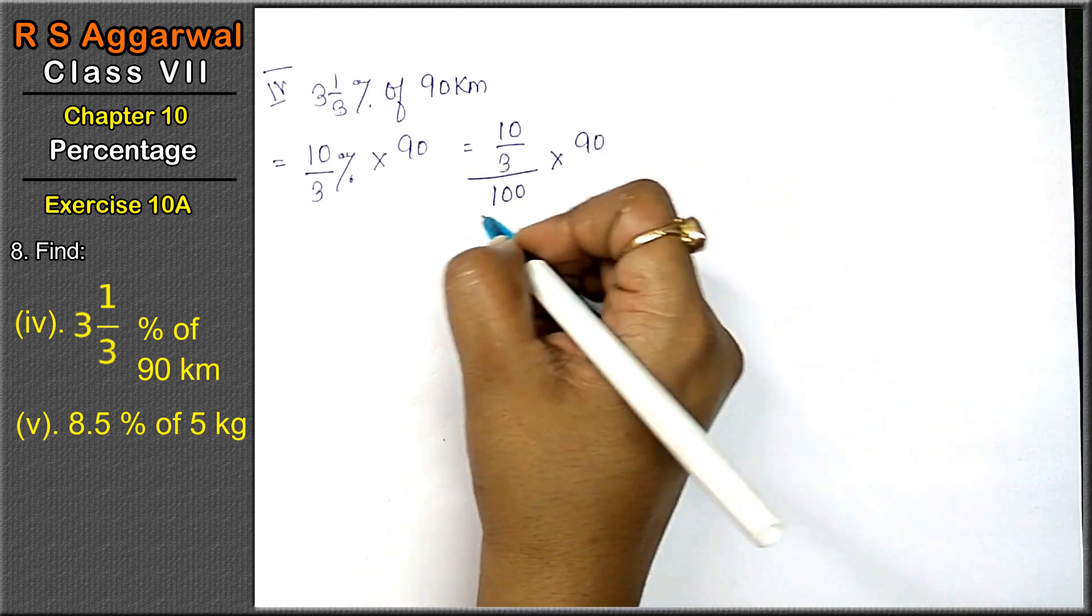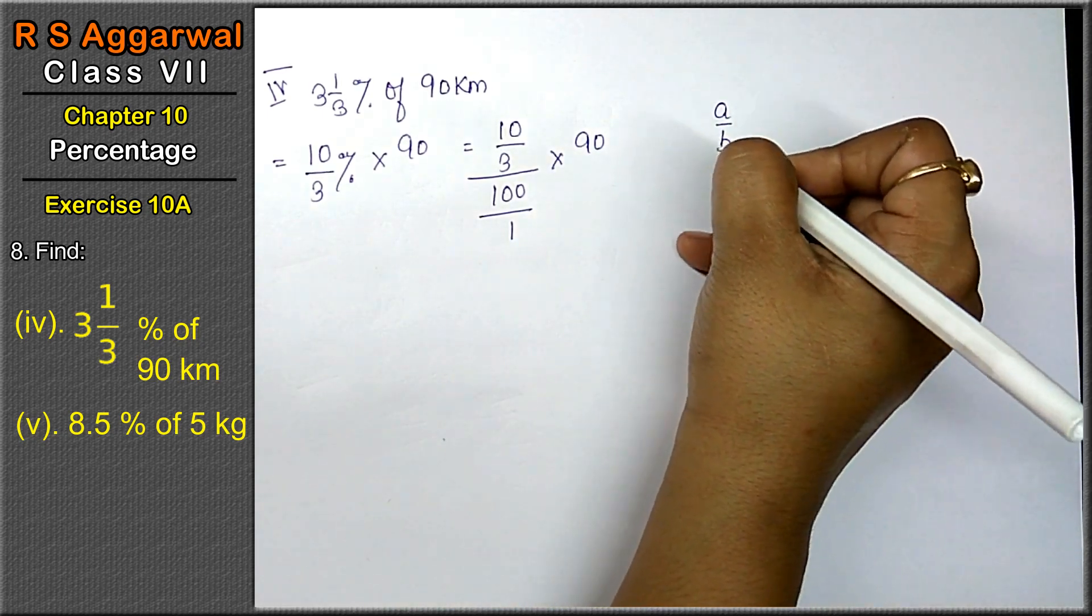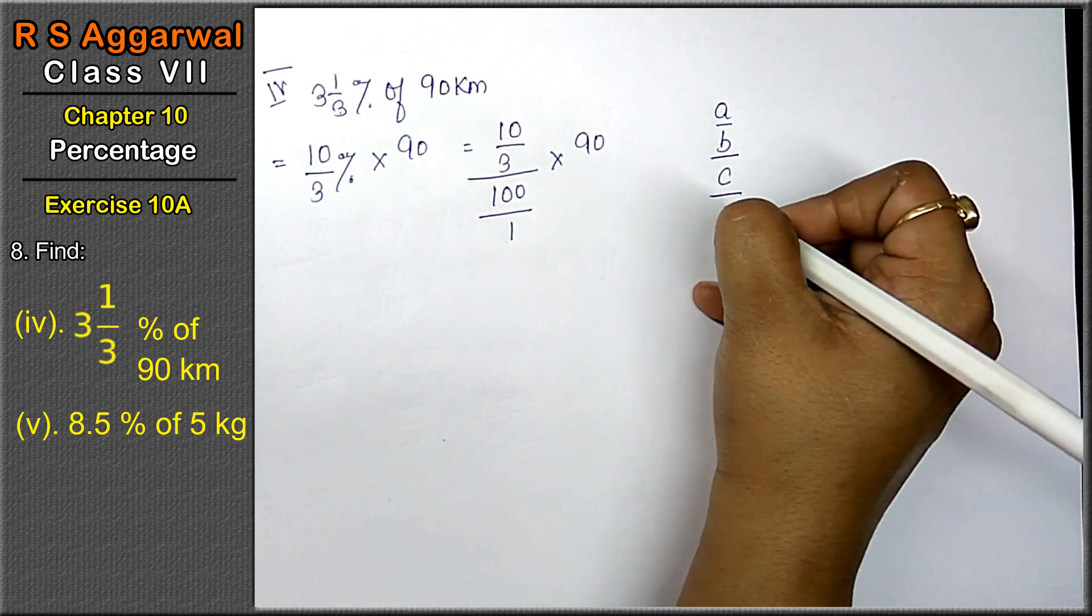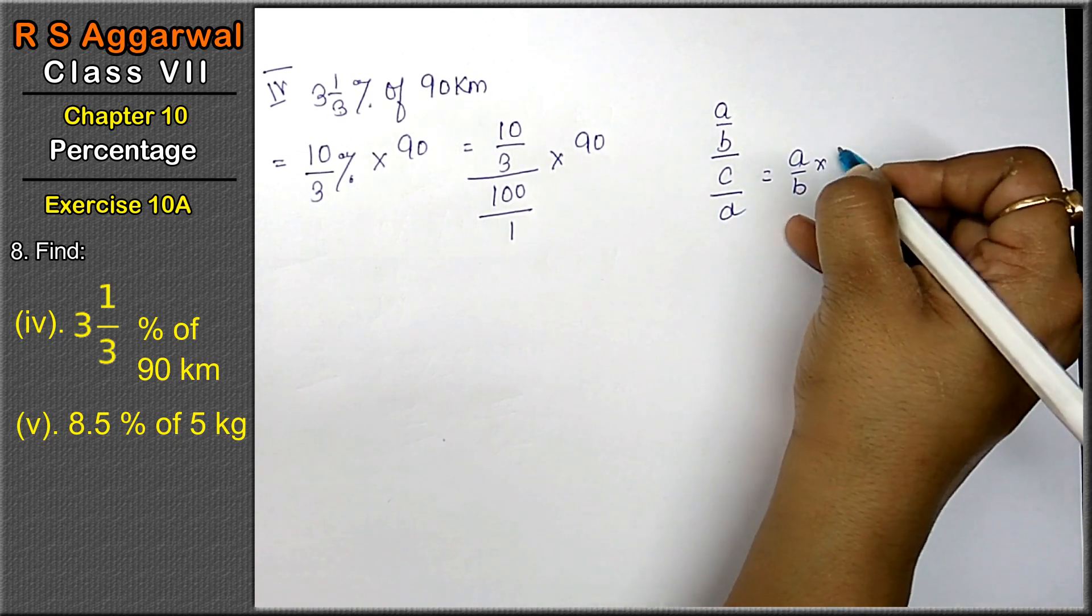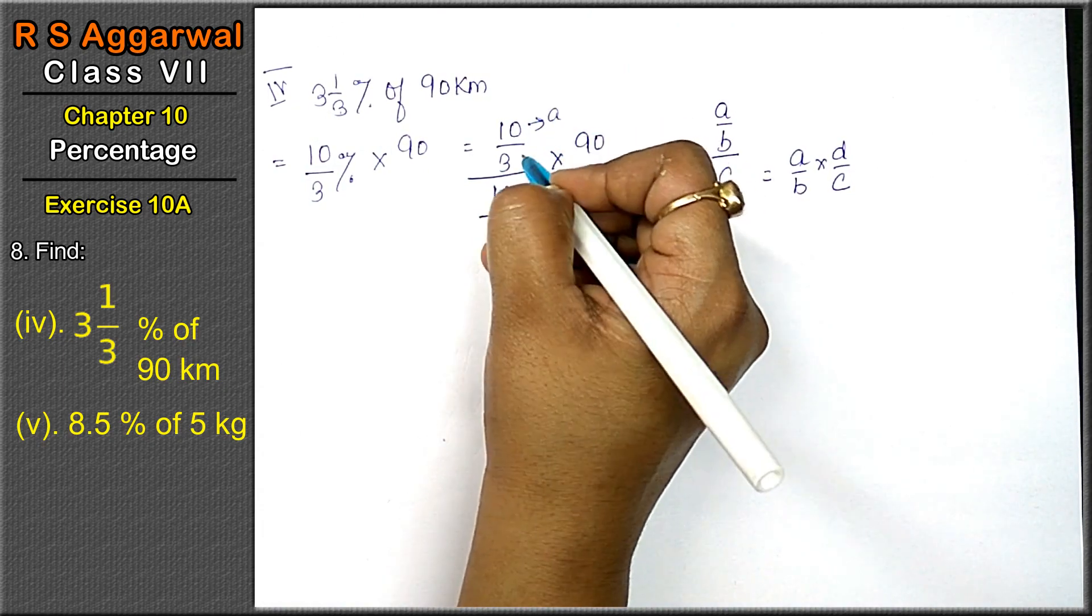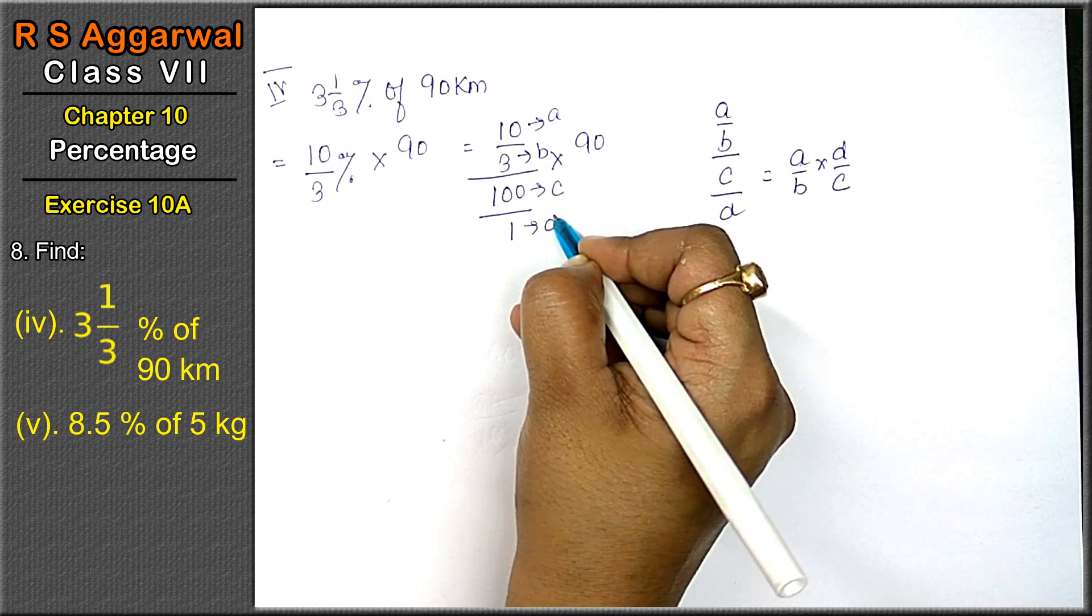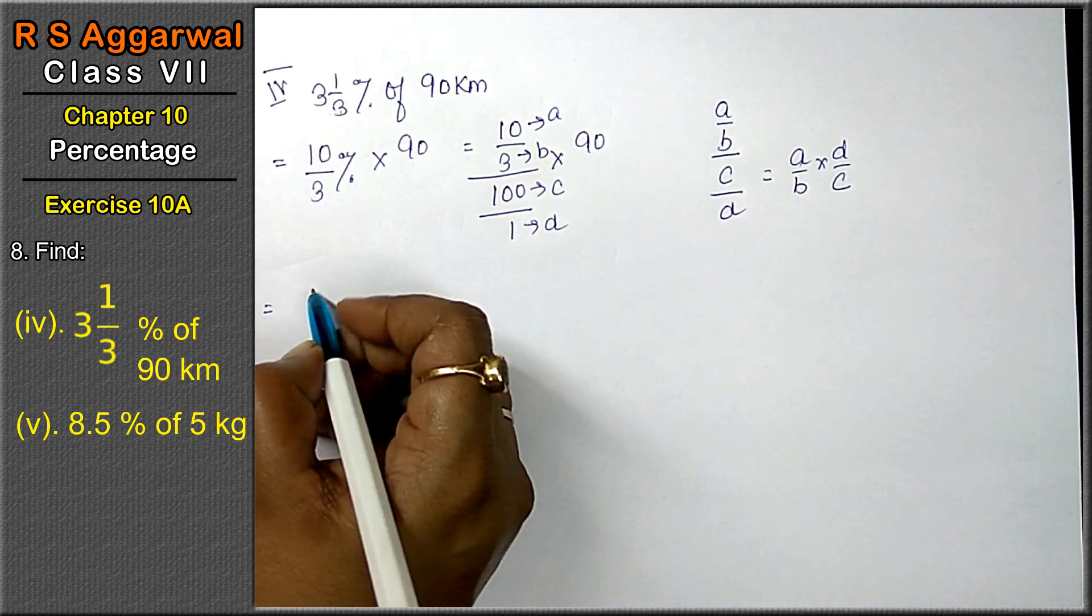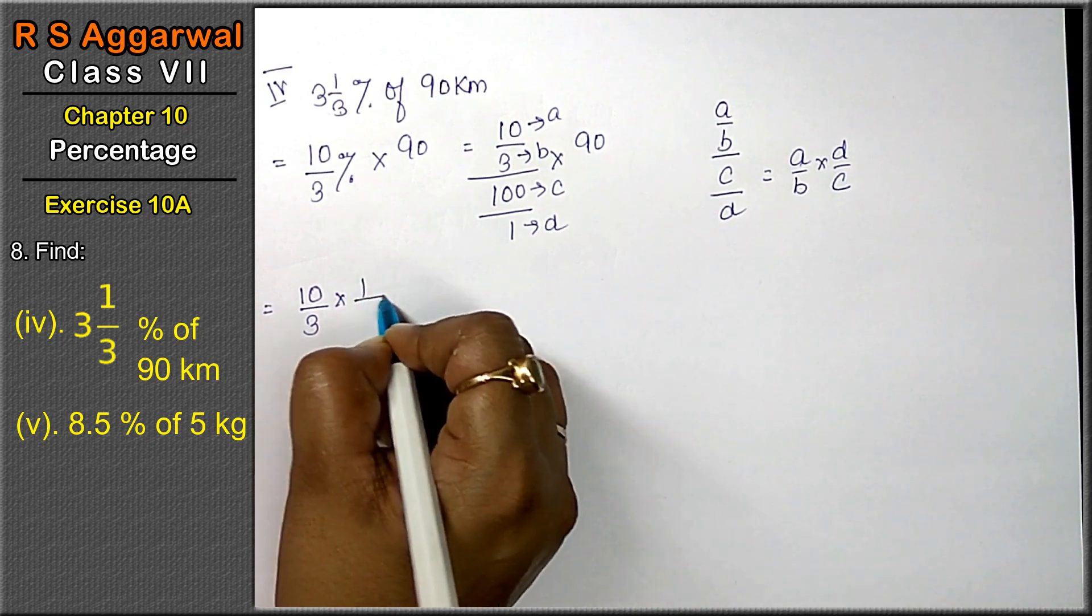Friends, when there's nothing below (denominator of 1), this a upon b upon c upon d form becomes a upon b multiplied by d upon c. Here a is 10, b is 3, c is 100, and d is 1. So a upon b is 10 upon 3 multiplied by 1 upon 100 into 90.